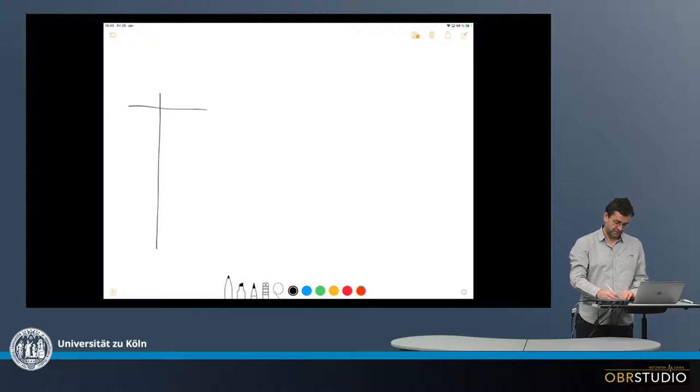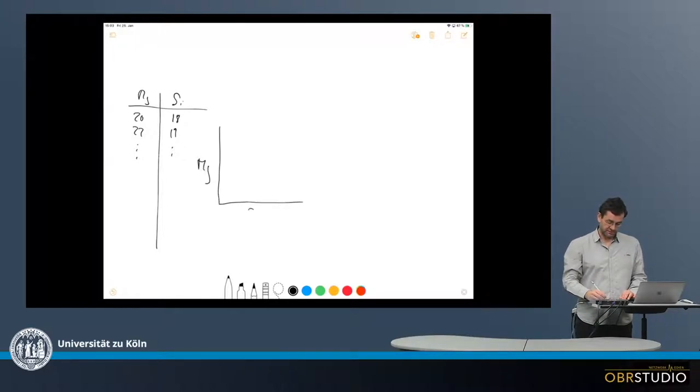For example, something like this. Magnesium and silicon, here 20, 22 percent weight percent, and so on, and 18, 19 silicon, and so on. And we can use a scatter plot and plot magnesium versus silicon and put in all our data into this plot. No problem.